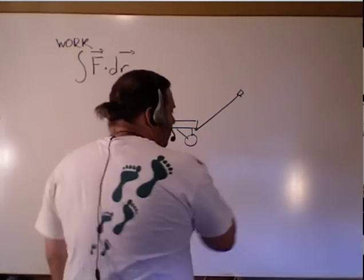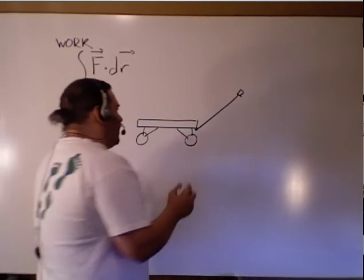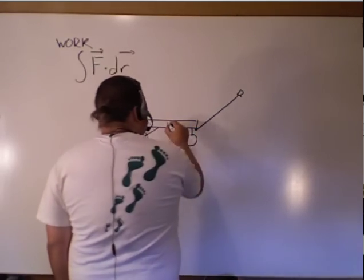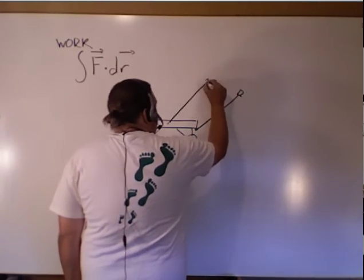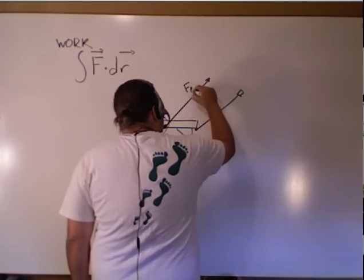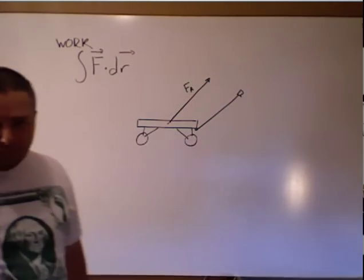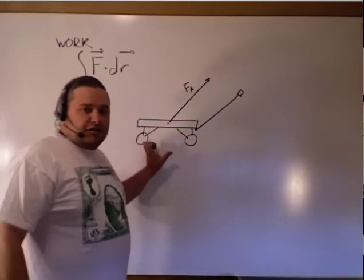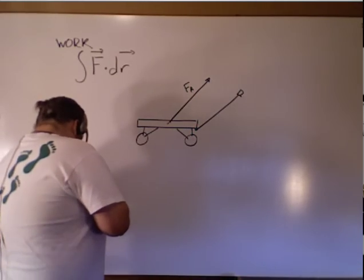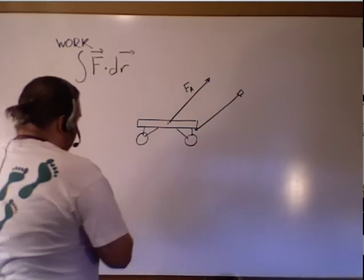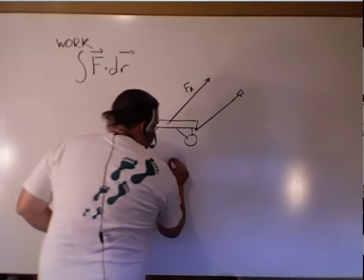So I pull on this. I'm applying a force, and the force I'm applying, remember rules of free body diagrams, I'm going to start from the center of the object. The force that I'm applying is like this. But the distance that I travel is not going to be in that direction. The distance that I'm going to travel is going to be in this direction.